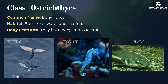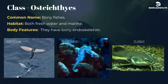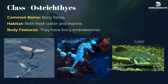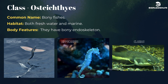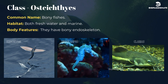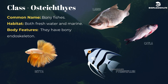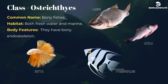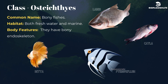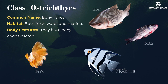Class Osteichthyes, commonly known as bony fishes. Both freshwater and marine. They have a bony endoskeleton. Common examples are Exocoetus (flying fish), Hippocampus (seahorse), Labeo (rohu), Catla (catla), Clarias (magur), Betta (fighting fish), and Pterophyllum (angelfish).